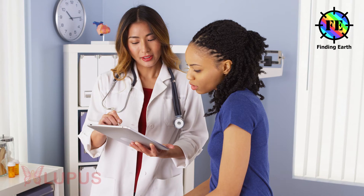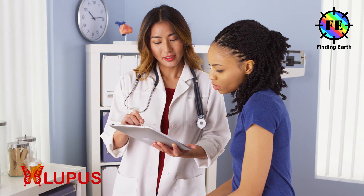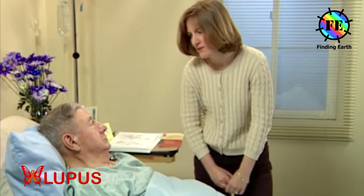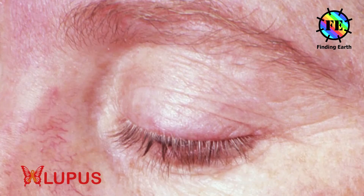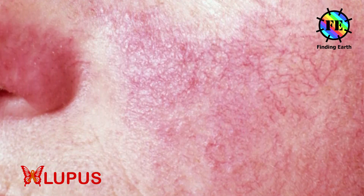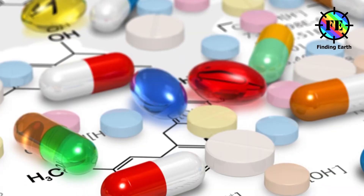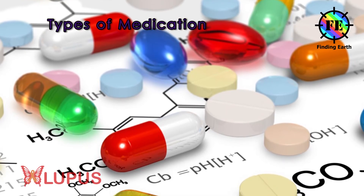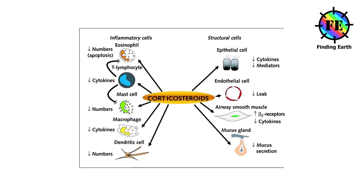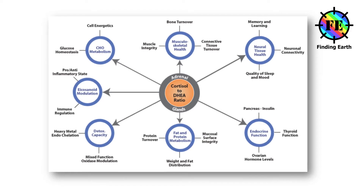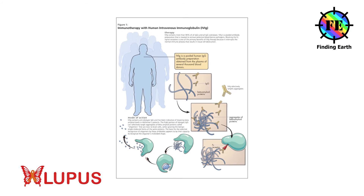Once lupus has been diagnosed, the doctor or rheumatologist will develop a treatment plan based on the patient's age, sex, health, symptoms and lifestyle. The doctor will aim to prevent flares, treat flares when they occur, and reduce organ damage and other problems. Types of medications used in treatment include NSAIDs, antimalarials, corticosteroids, immunosuppressives, hormonal therapies such as DHEA, and intravenous immunoglobulin.